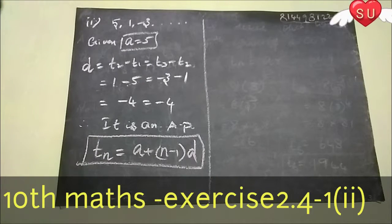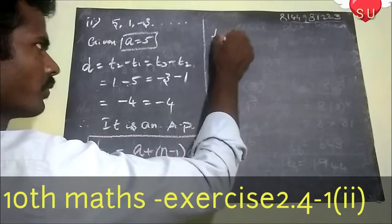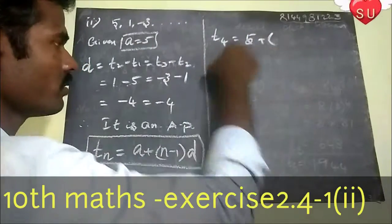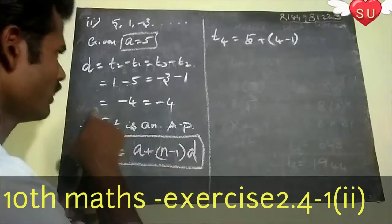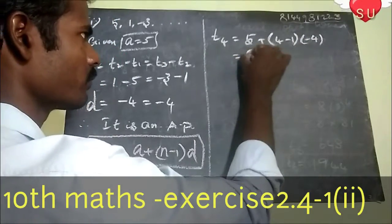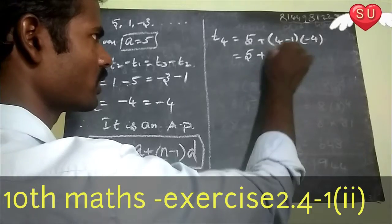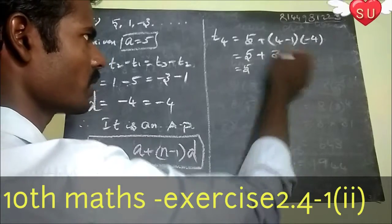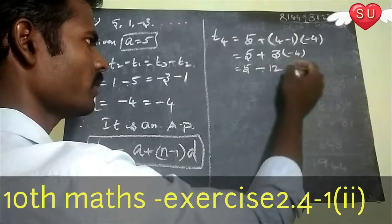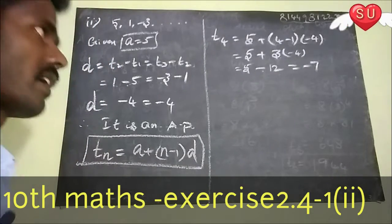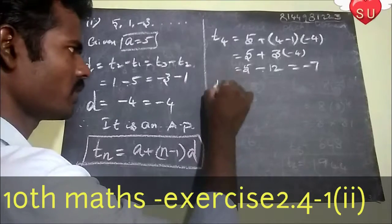This is the next two or three terms. Already 1, 2, 3 are given. Next one is going to be the 4th term, T4. So, a value is 5. N is equal to 4. So, 4 minus 1 is 3. Difference is minus 4. Therefore, T4 equals 5 plus (4 minus 1) into minus 4, which is 5 plus 3 into minus 4. That is 5 minus 12, so now minus 7.